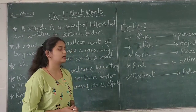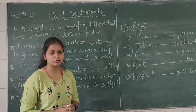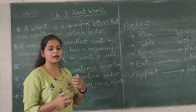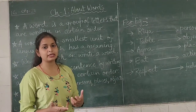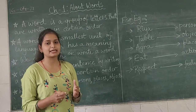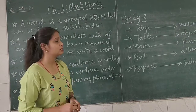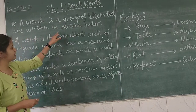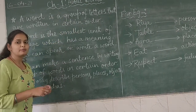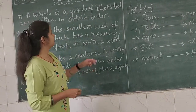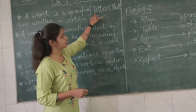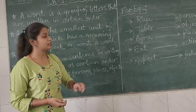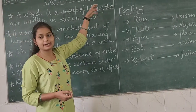Now, starting with today's video, today's topic is about words. Words kya hoate hain? Jo bhi hum words likhte hain ya bolte hain — exactly what is the meaning of a word? So a word is a group of letters that are written in a certain order. Koi bhi word agar aap likh rahe hain, like this word 'letters'. Now iske andar kya hai? Bohut saare letters hain.